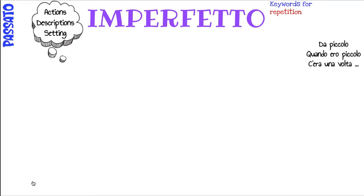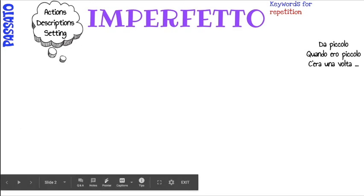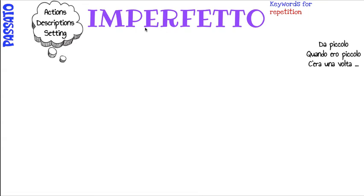The imperfect is another past tense. As you can already see, it's past and there'll be some keywords that I will teach you. It's another past tense and it has its own uses. The first thing we need to do is learn how to conjugate it, and then we'll learn when we use it. It usually refers to general actions in the past or repetitive actions in the past, descriptions of actions in the past without a specific time connected to it, or setting in the past.